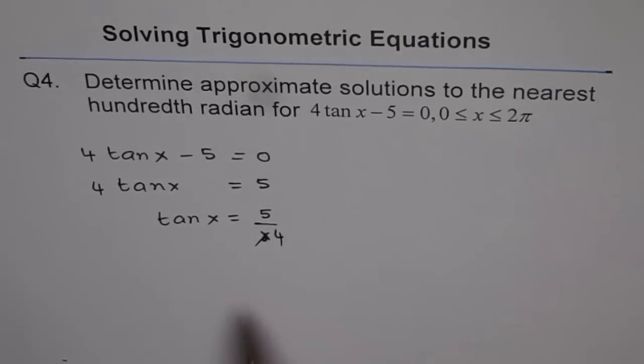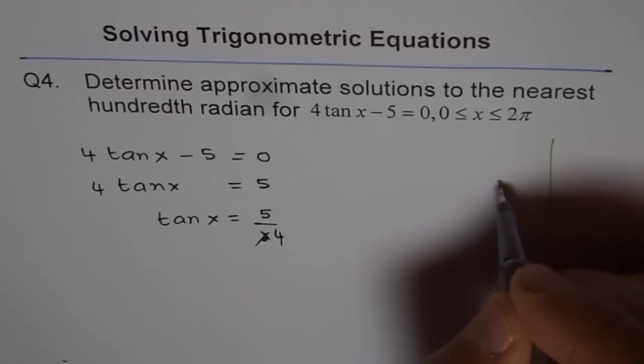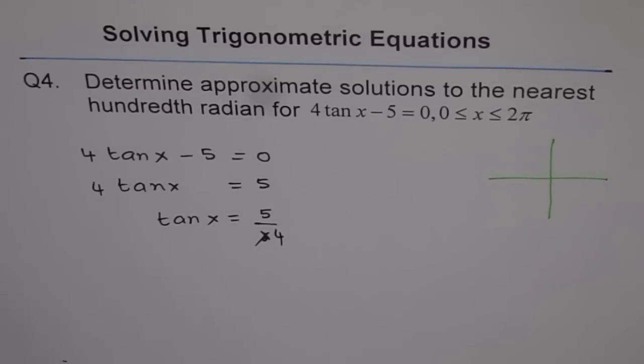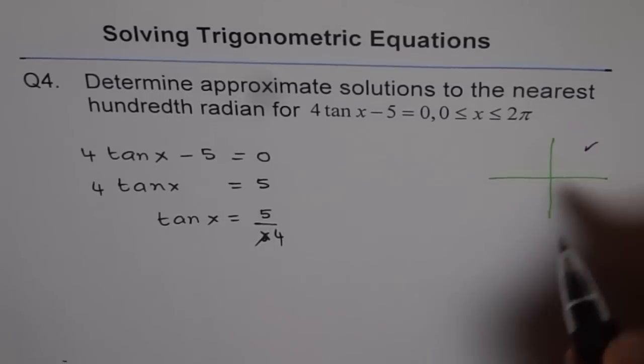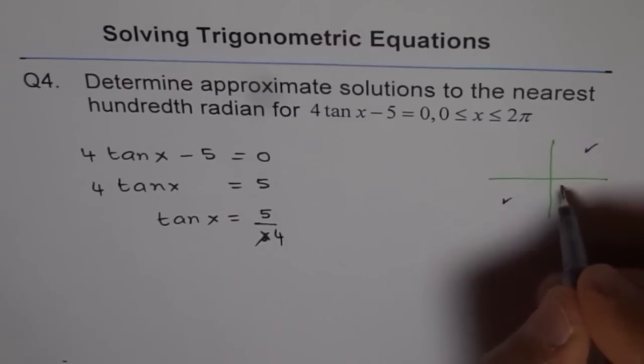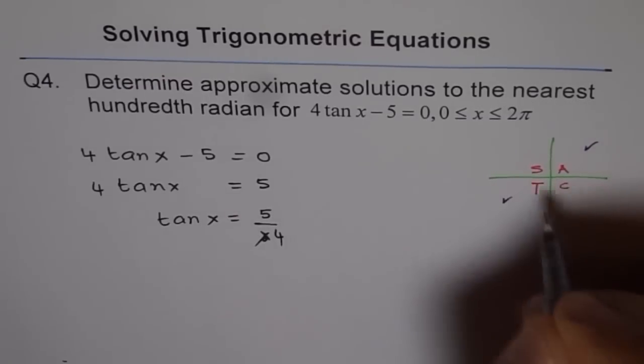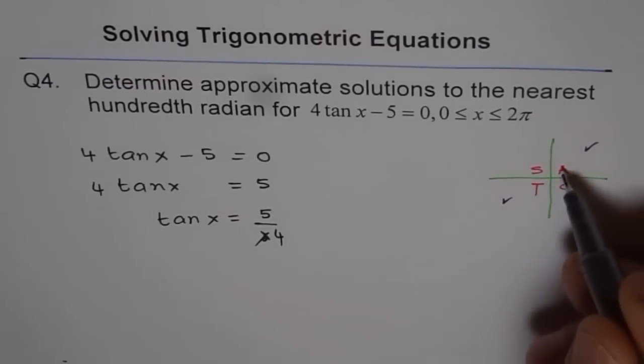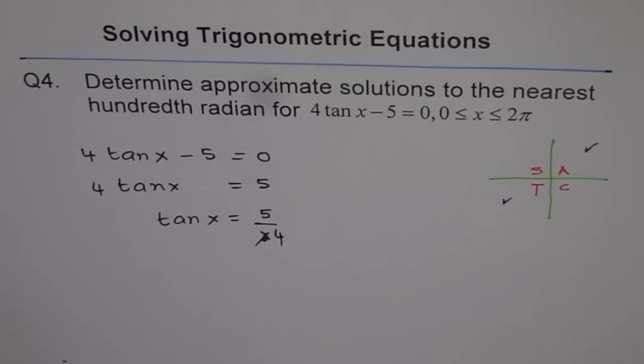So tan x is 5 over 4, which is positive. Tan is positive in two quadrants. Which are those two quadrants? The quadrants are quadrant 1 and quadrant 3. How do we know that? From the CAST rule. Tan is positive in quadrant 3, and all are positive in quadrant 1.